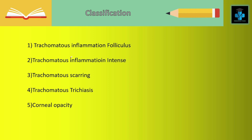Now let's move on to the WHO classification. First we have trachomatous inflammation follicles, named so because it has predominant follicular inflammation at the upper tarsal conjunctiva. Next is trachomatous inflammation intense, where there is inflammatory thickening at the upper tarsal which obscures more than half of the normal blood vessels. Next is trachomatous scarring, where we can appreciate scarring in the tarsal conjunctiva leading to whitish bands or sheet-like structures. Next is trachomatous trichiasis, where at least one eyelash is rubbing against the eyeball. Finally, corneal opacity, which is due to corneal scarring.